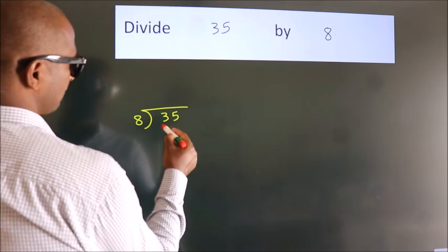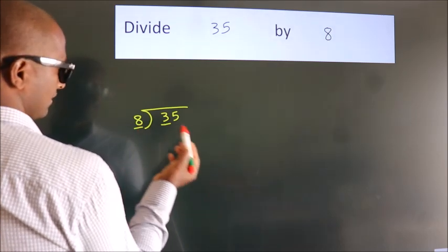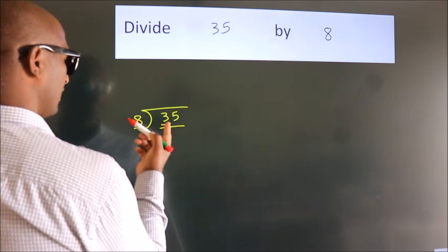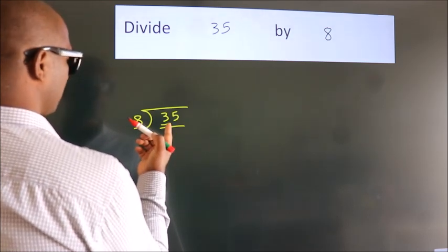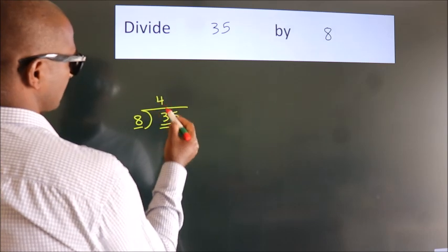Next, here we have 3. Here 8. 3 is smaller than 8, so we should take 2 numbers: 35. A number close to 35 in the 8 table is 8 fours, 32.